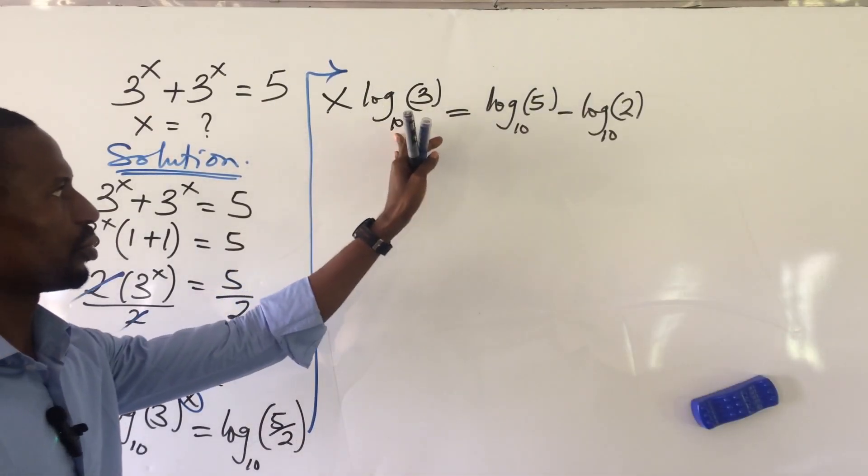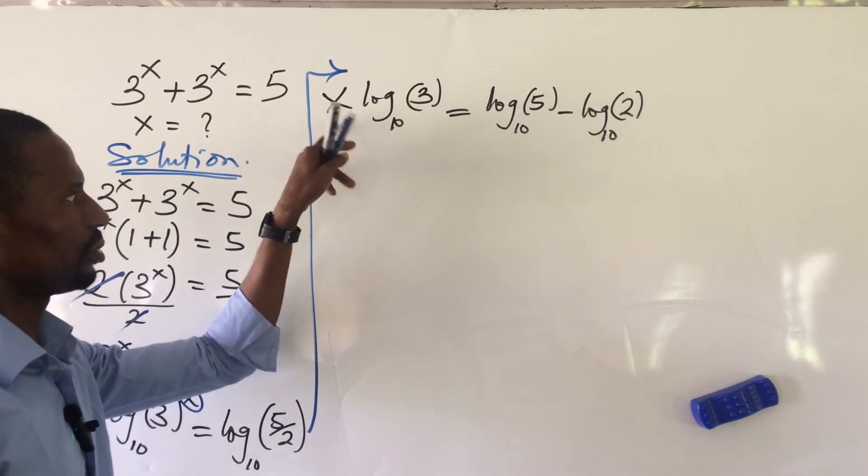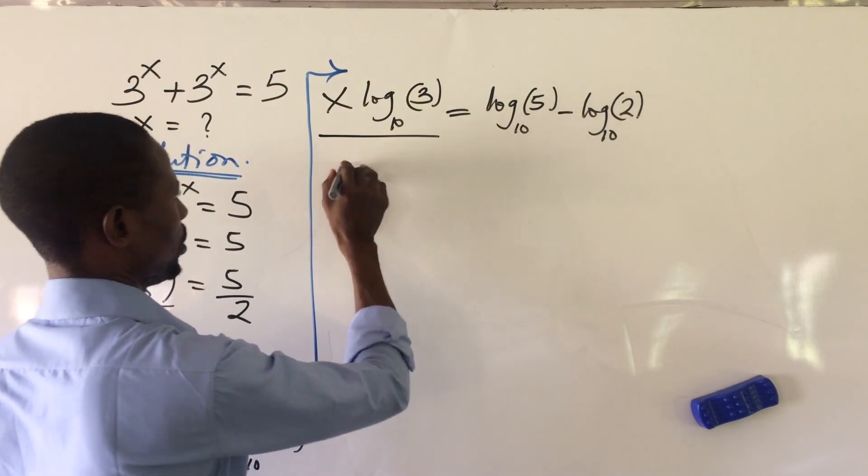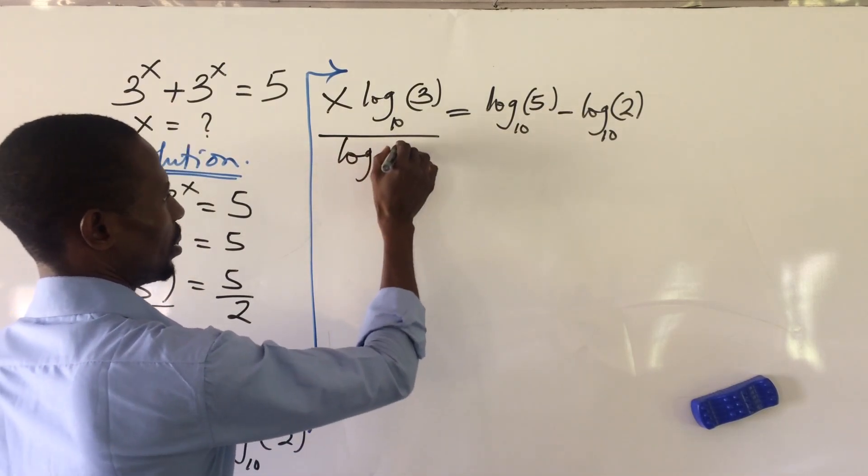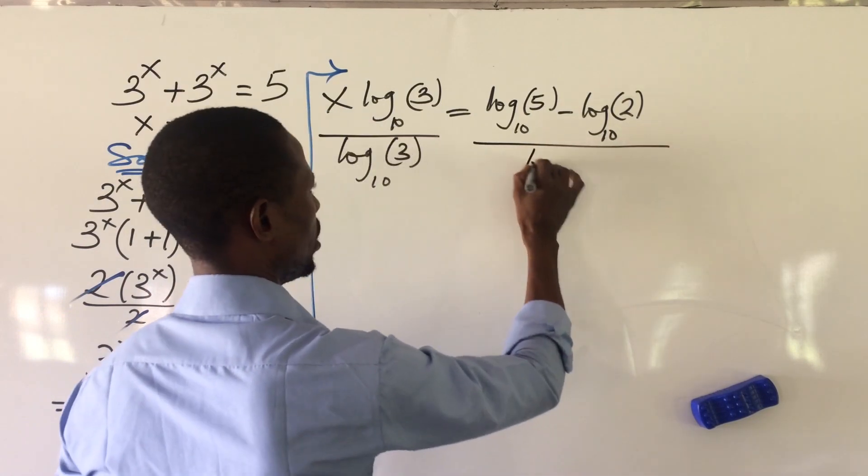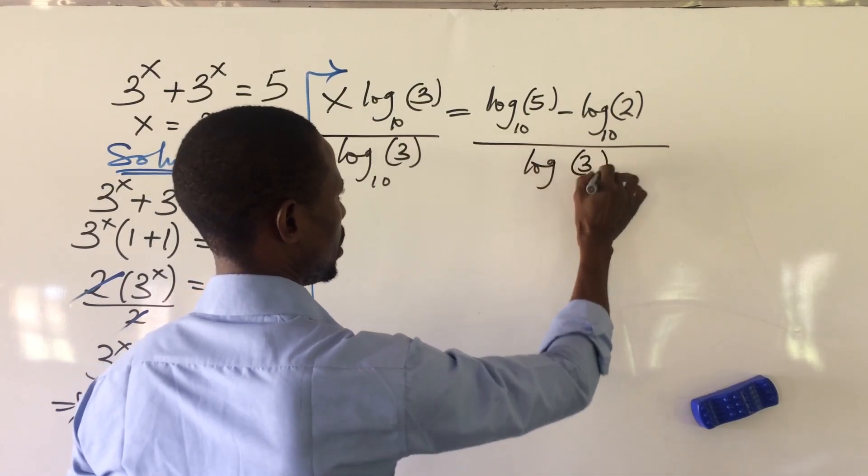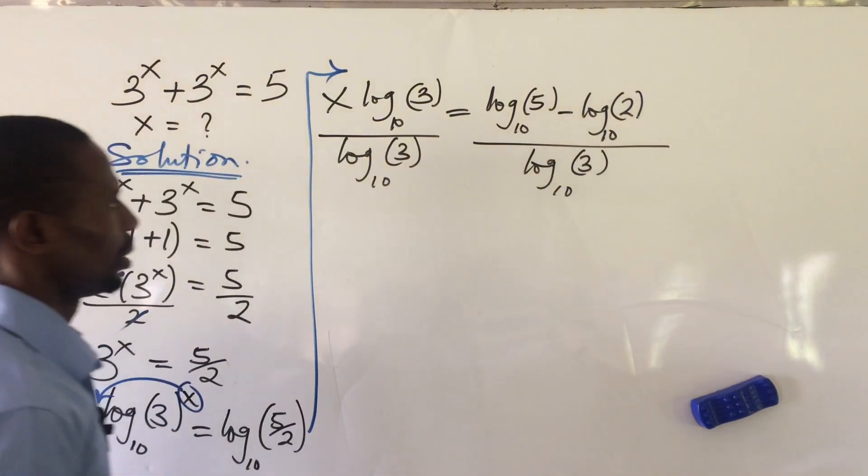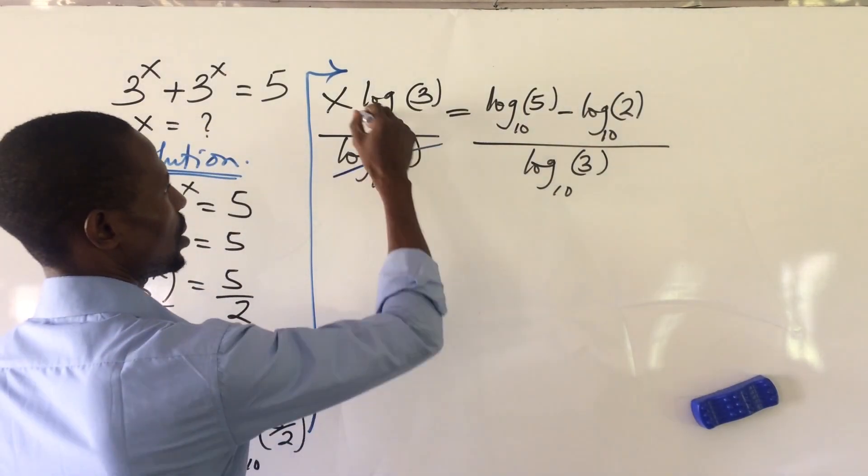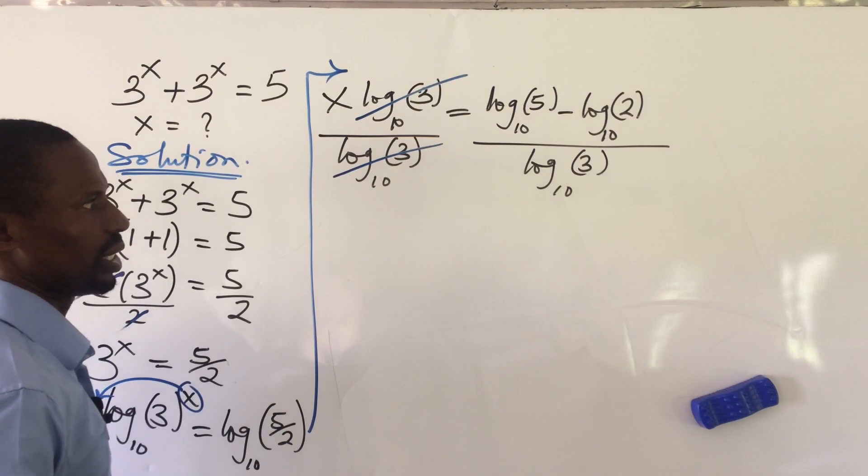Now, we're going to divide through by log 3 base 10 to get our x, because that is the aim of the whole thing. So we have here log divided by log 3 base 10, all over log 3 base 10. The left hand side of the equation, this and this cancel, we're left with x.